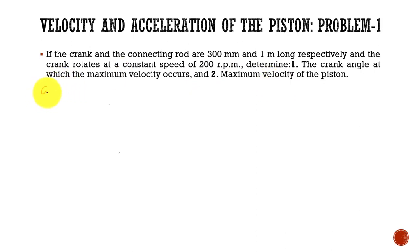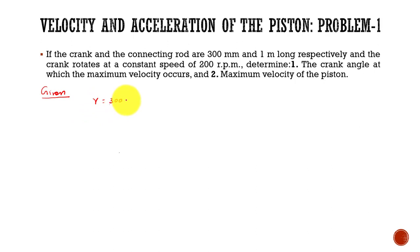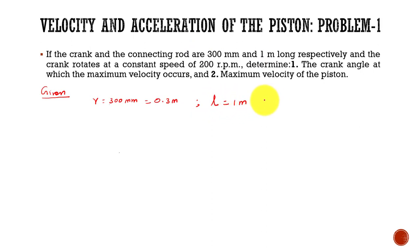Now we will write down the given data. The radius of the crank is 300 mm, which we convert to 0.3 meter. The length of the connecting rod, represented by small l, is equal to 1 meter. And the speed at which the crank rotates is 200 rpm. These are all the given data for this problem.